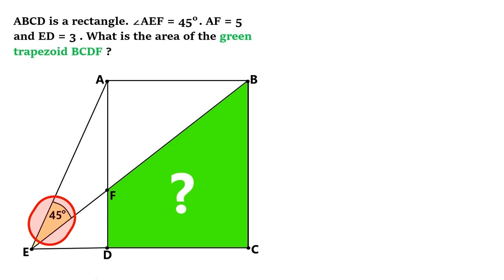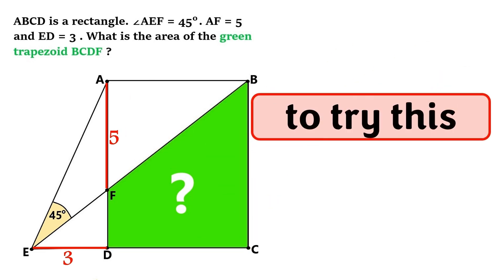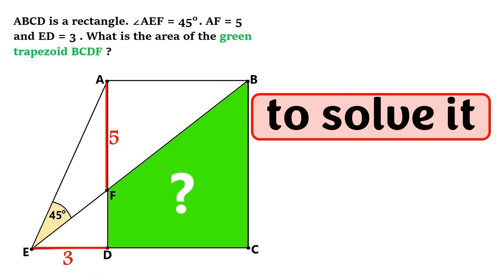And there's this 45 degree angle over here. And this segment AF is 5, and this segment ED is 3. And we are asked to find the area of this green trapezoid formed in here. So if you want to try this on your own, now is the time to pause the video, because I'm starting to solve it right now.